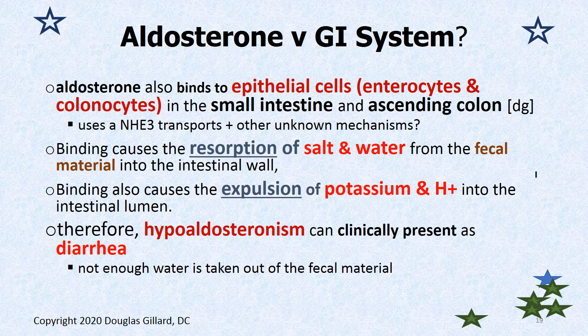What about aldosterone in the GI system? The enterocytes and colonocytes of the large intestine are like principal cells in a way — you can think of the intestine as just a collecting duct that acts the same way. There are binding sites for aldosterone and it does the same thing: it sucks in salt and water and kicks out hydrogen ion and potassium. It's not as big a mechanism as the kidney, but if it's broken — if you don't reabsorb salt and water — that's going to pass right through, and instead of polyuria in the kidney, you'll have diarrhea because your stools will be too watery.